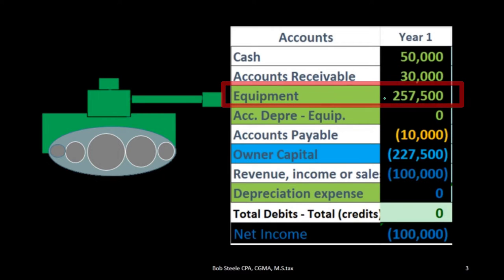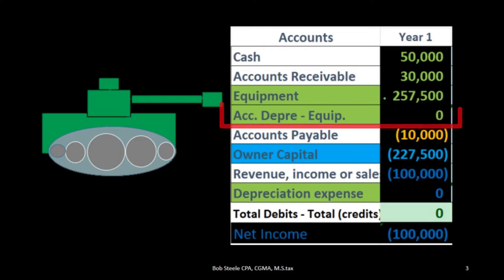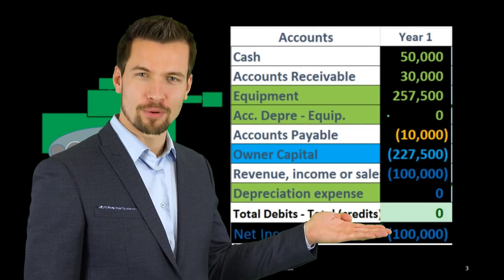We're going to do that not by decreasing the equipment directly, but by creating another account called accumulated depreciation. Why would we do that? Because that will tell our reader a few different things.